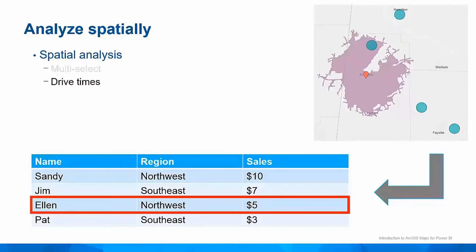You can also make spatial selections based on proximity to a location. The red pin on the map is in the Soligent, Alabama area. The purple area, created by our drive time tool, shows how far you can drive in any direction in 15 minutes. The calculated drive time area can be used to make a selection. In this example, Ellen is the only sales rep within 15 minutes of Soligent.